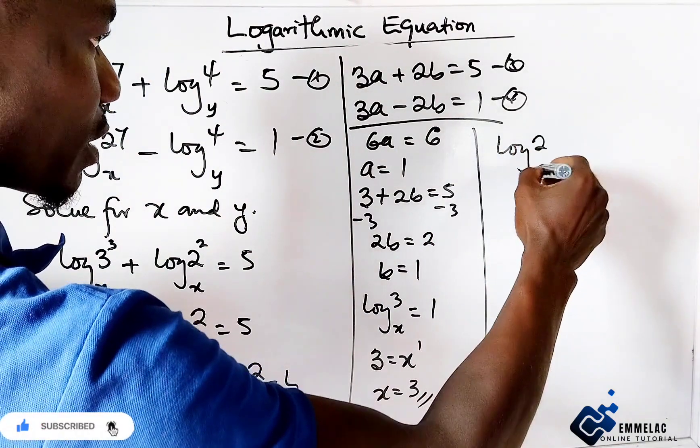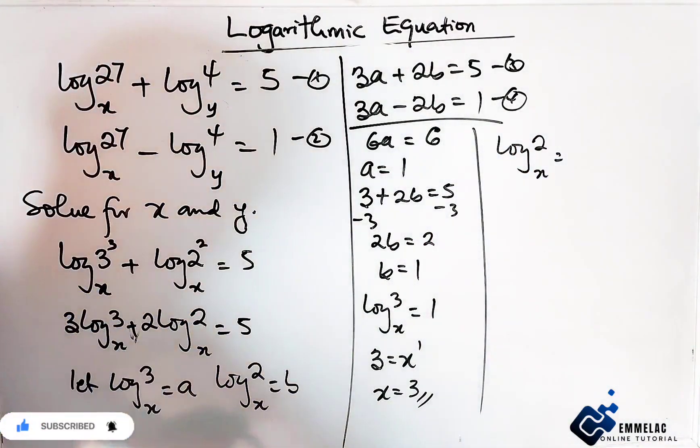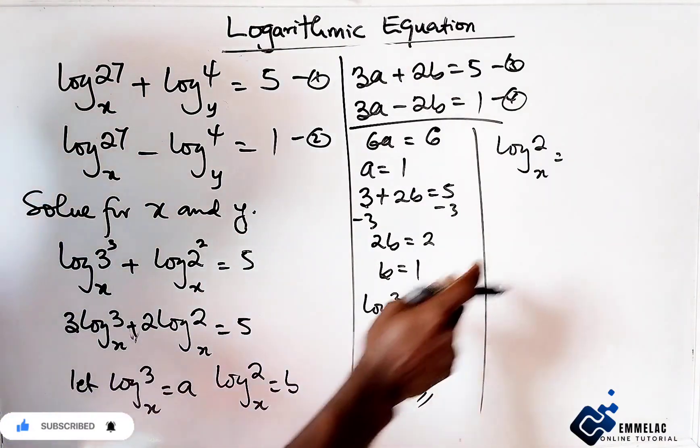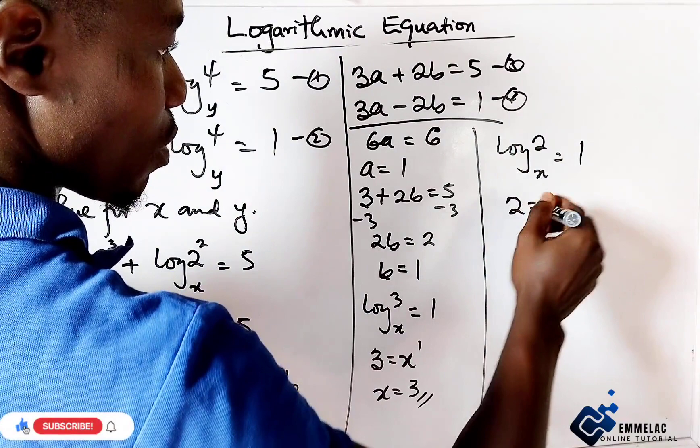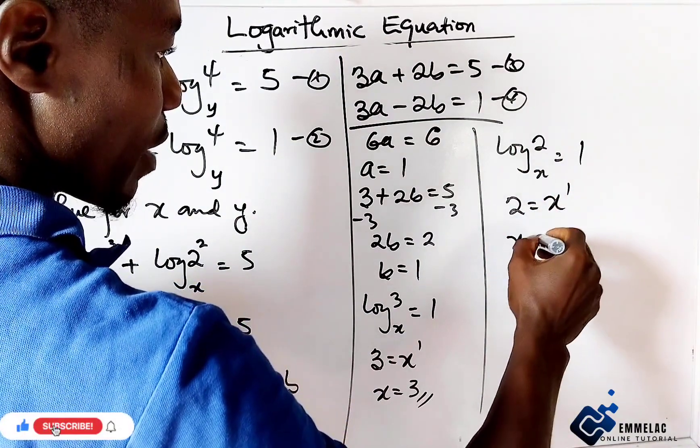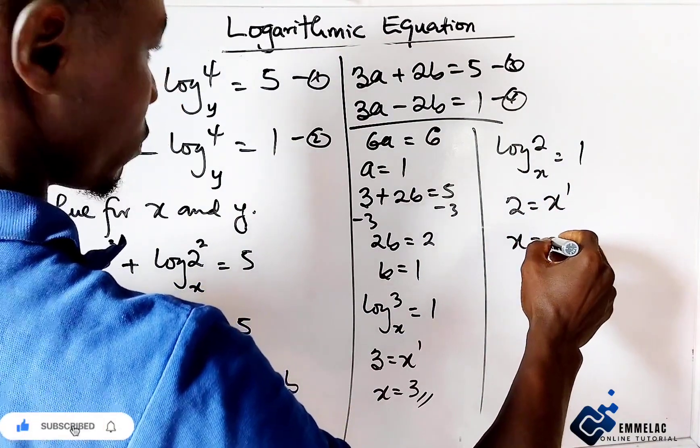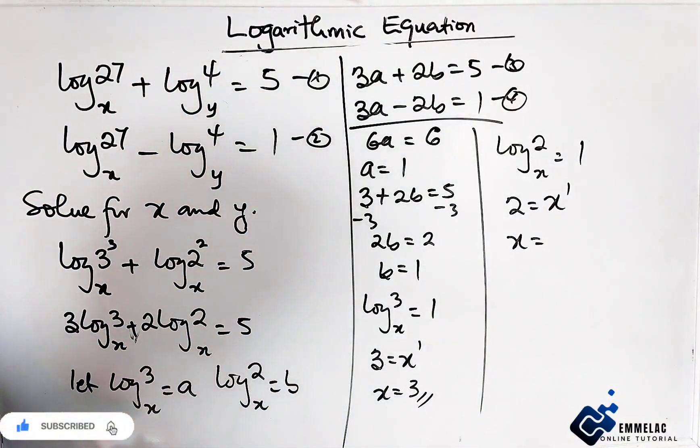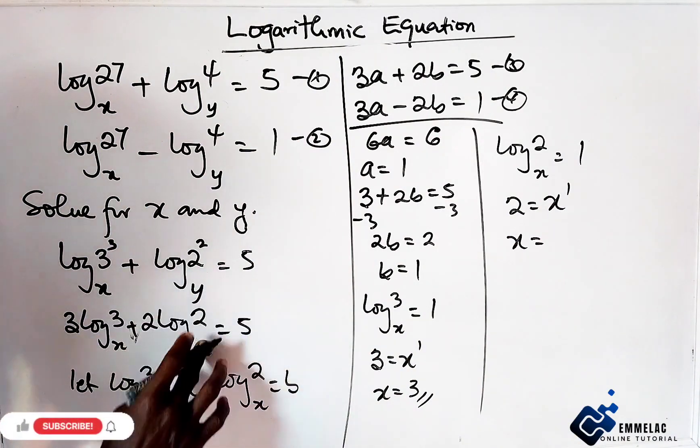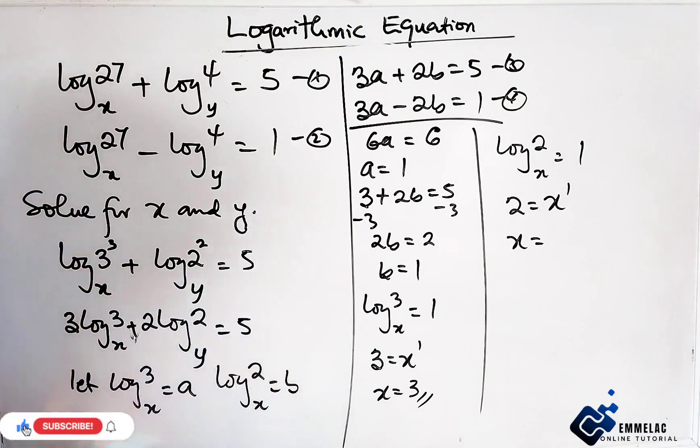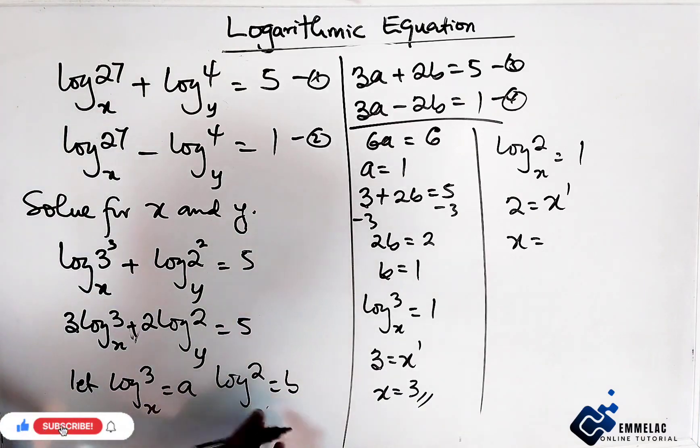Similarly, log base y of 2 equals b, and b is also 1. Changing this to index form, we have 2 raised to the power 1... sorry, this should be y not x throughout. Log base y of 2 equals 1.